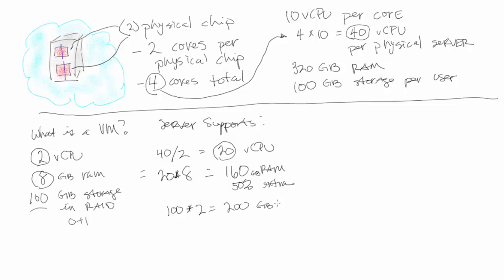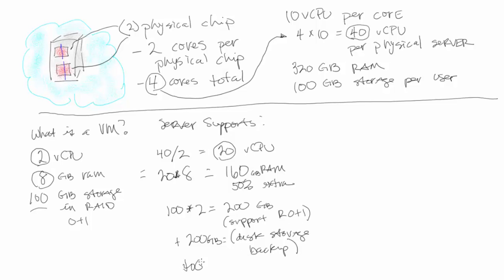We're going to put 100 gigabytes per user usable, which means 200 gigabytes in a RAID 0+1 configuration. Then let's add for backup, grandfather archives, and things of that nature — let's double that capacity size, so add another 200 gigabytes — and we'll come up with a total of 400 gigabytes per VM.